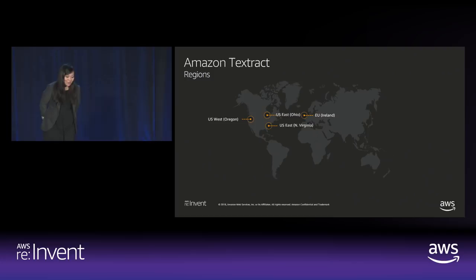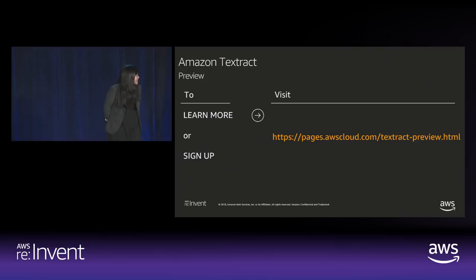To help you get started, we have a free tier for three months: you can process up to 1,000 pages for text extraction and 100 pages for structured data extraction. Today we're available in preview in four regions. To learn more and sign up for our preview, you can visit the website shown.